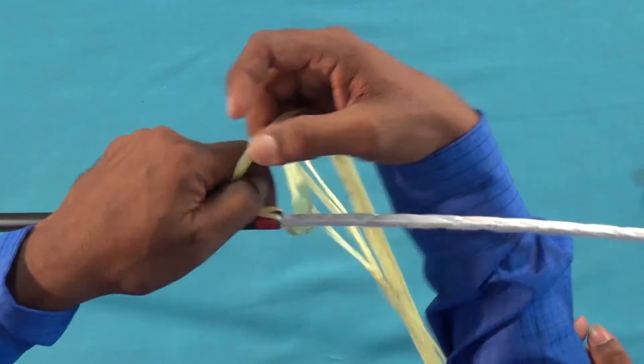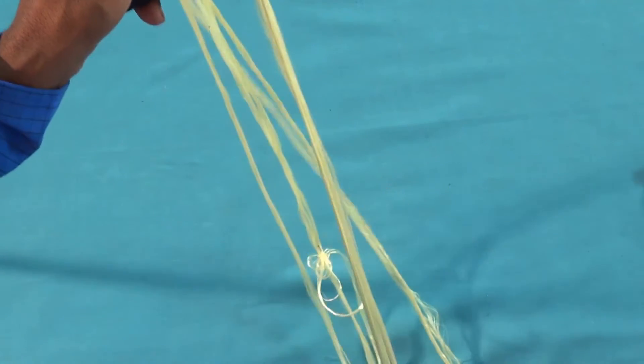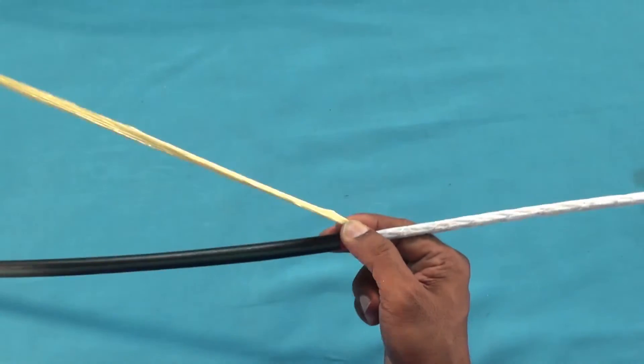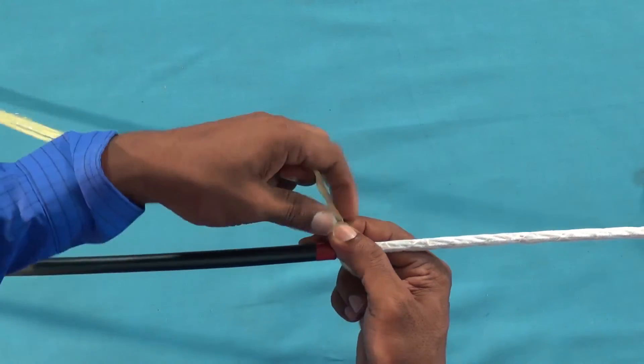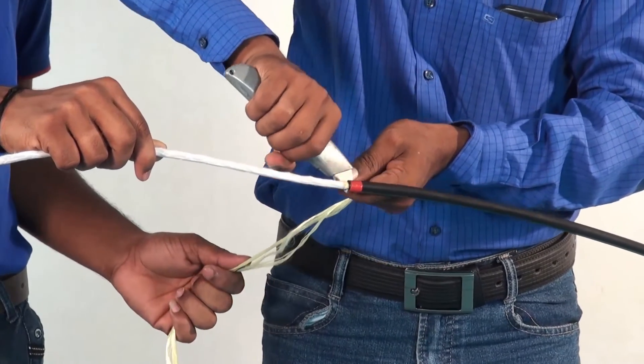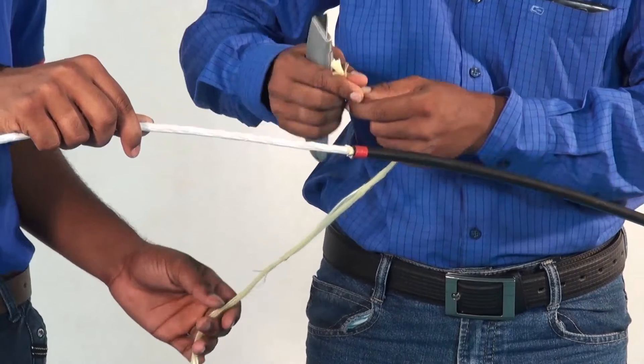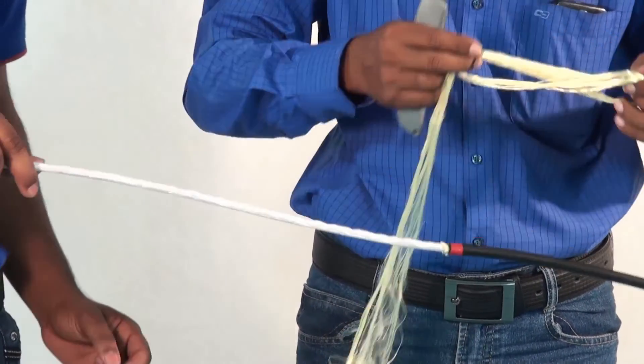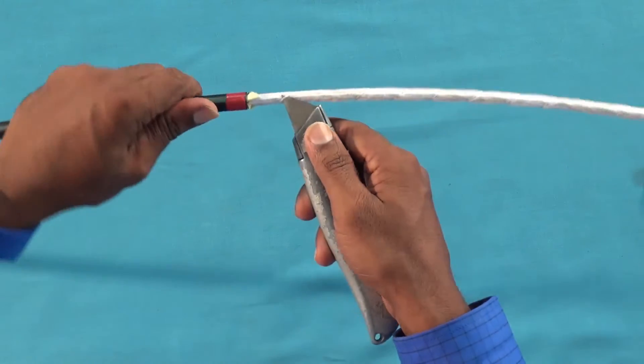Underneath the sheath lies the Kevlar strength yarns. Hold them together and cut them. Then cut the binder tape using a knife.